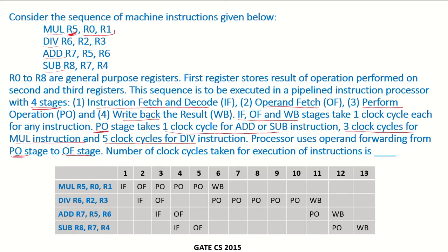What will be the number of clock cycles taken for execution? Each instruction has to go through four stages. First, the mul instruction goes through instruction fetch and decode, operand fetch, then perform operation. Since this is a mul instruction, it requires three clock cycles for perform operation, followed by a write back. Instruction fetch, operand fetch, and write back each require one clock cycle only.